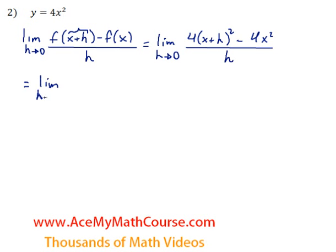So, limit as h approaches 0. The limit as h approaches 0 of 4 times x plus h. Now I'm going to have to expand x plus h squared.